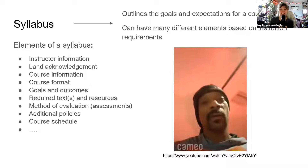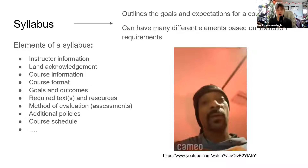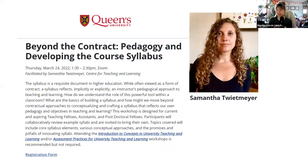There's a great little video online of Snoop Dogg telling everyone to just check out the syllabus. The syllabus outlines the goals and expectations for a course and can have many elements based on institutional requirements. General elements include instructor information, land acknowledgement, course information, course format, goals and outcomes, learning outcomes, required texts and resources, methods of evaluation, additional policies, and course schedule.